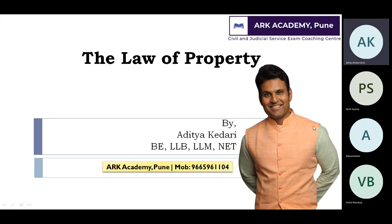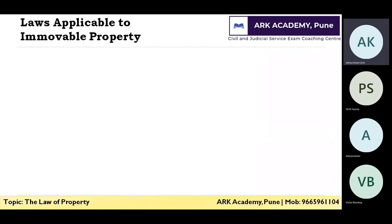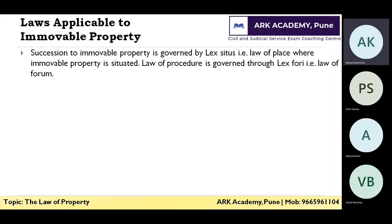We are going to start with the new topic: Law of Property, where one of the parties is a foreigner. There are two types of properties: immovable property and movable property. Immovable property includes land, bungalow, flat, and farmhouse. The rule that governs succession to immovable property is lex situs, meaning the law of where the immovable property is situated.